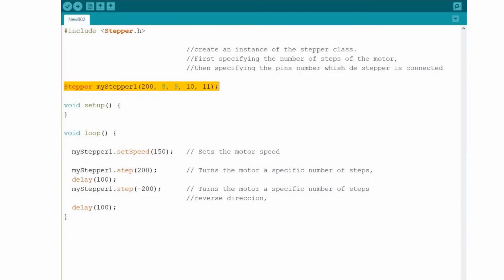Now configure the first motor. The first number, 200, specifies the number of steps in your motor. In this case, our motor has 200 steps per one revolution. The next four numbers specify the Arduino pins that are connected into the board.